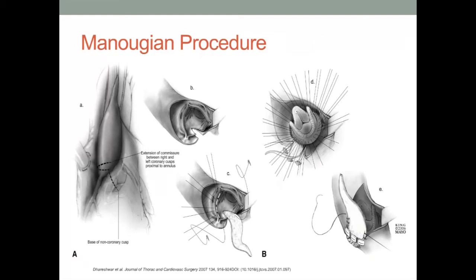The Manouguian incision provides the surgeon with another well-accepted posterior enlargement technique. This incision is placed through the mid portion of the non-coronary sinus. Within the A section of this particular slide, one can appreciate the geometric relationship between where the incision is initiated and the extent of its length through the base of the non-coronary cusp, as well as the internal depiction of the incision. The B section of this slide provides a general representation of patch followed by prosthesis placement in regards to reconstruction, which will be described in greater detail within the next few slides.